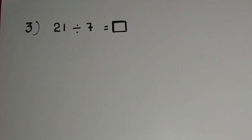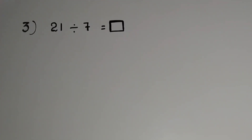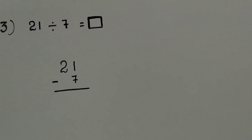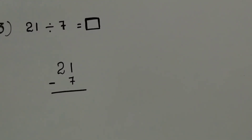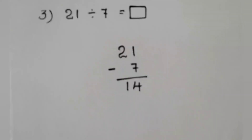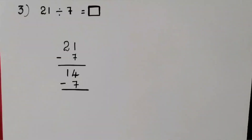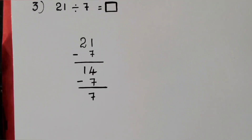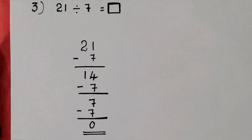Next example: 21 divided by 7. Here we are going to subtract 7 from 21 until we get 0. First we subtract 7 from 21. Students, tell me what is the answer. Yes, that is 14. So 21 minus 7 is equal to 14. Next we subtract 7 from 14. The answer is 7. 14 minus 7 is equal to 7. Next, 7 minus 7 is equal to 0.